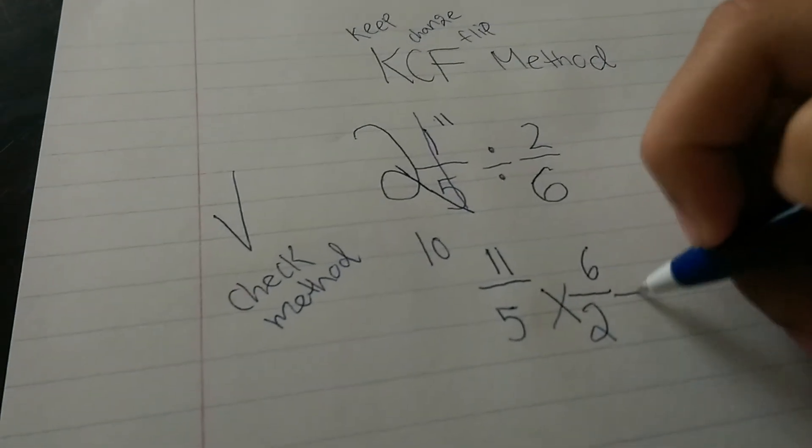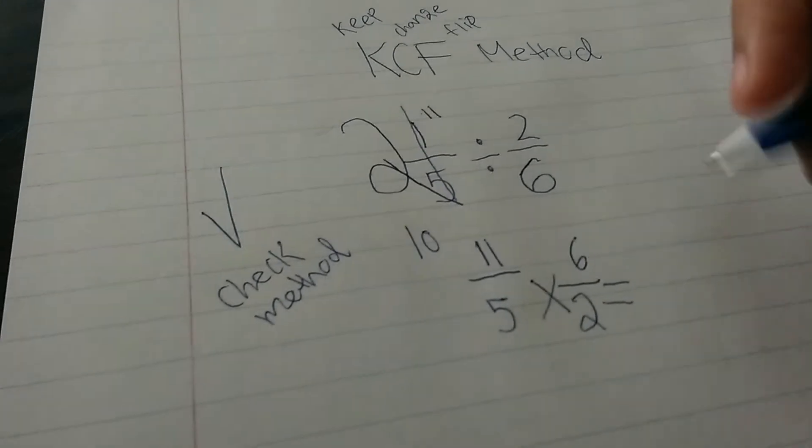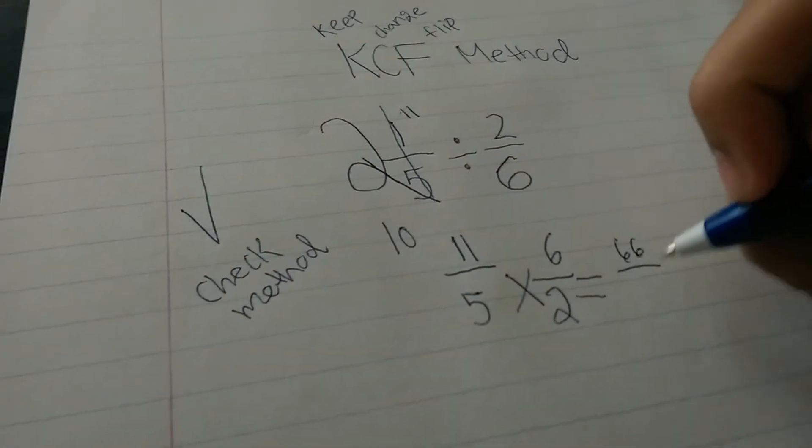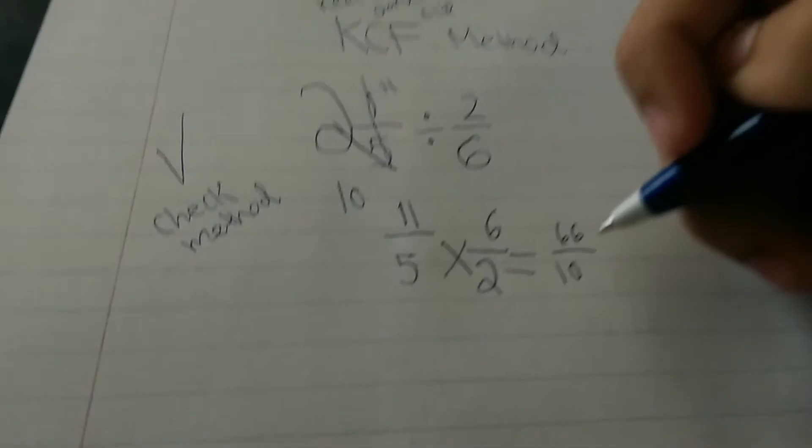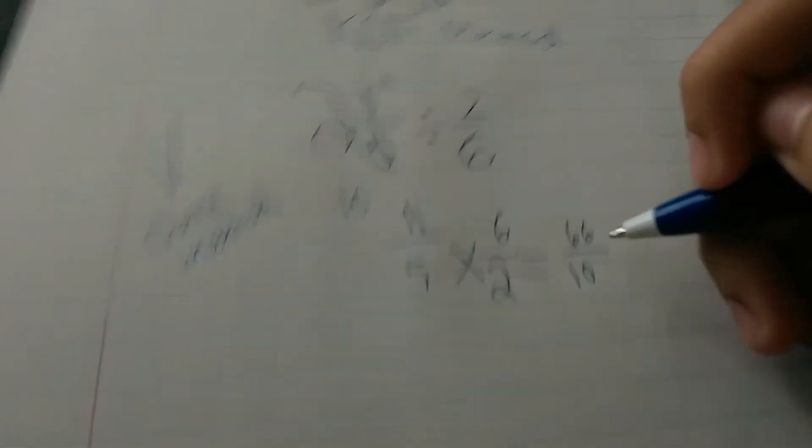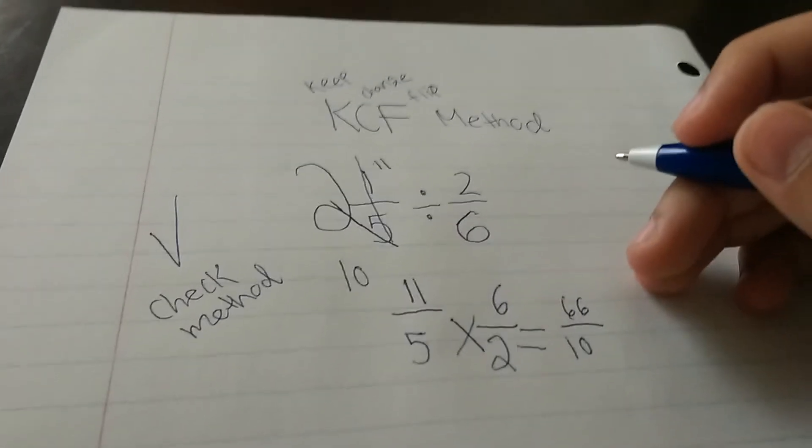And then, we can multiply. So, 11 times 6 is 66. 5 times 2 is 10. And, yeah. And then, you just simplify it, and you're sure to get your answer.